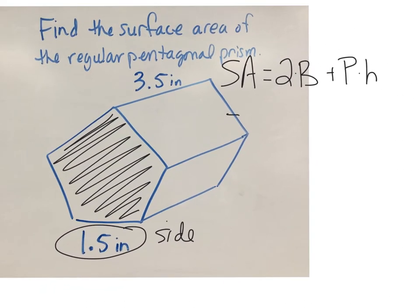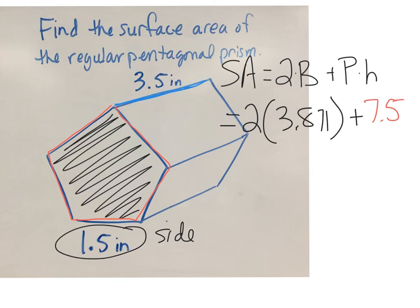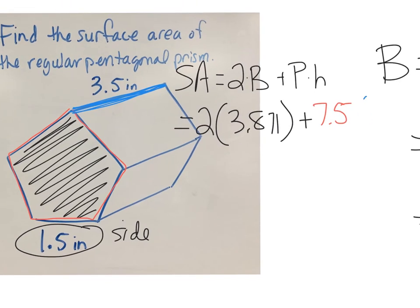Coming back to the formula: 2 times 3.871 plus the perimeter, which is the distance around the base. Five sides of 1.5 each gives us 7.5, times the height of the prism, which is 3.5 inches.